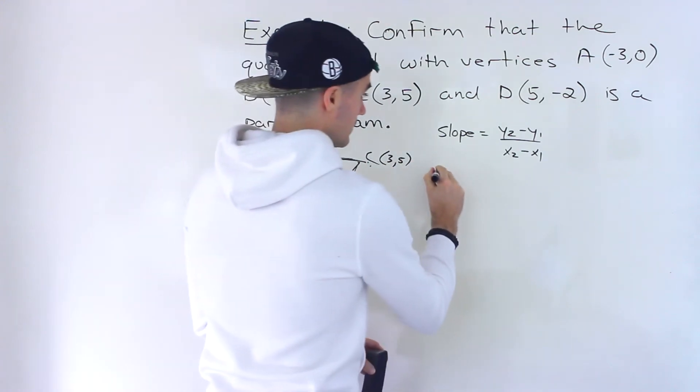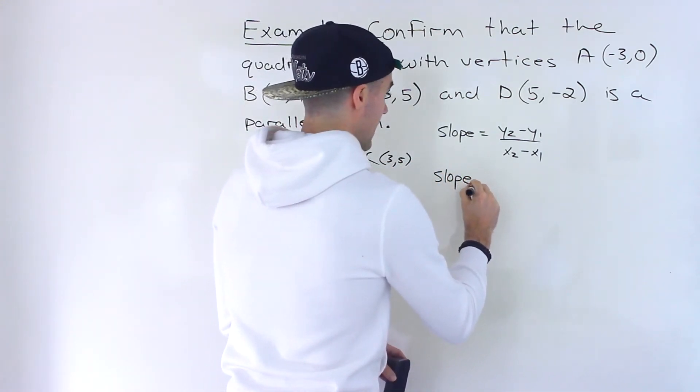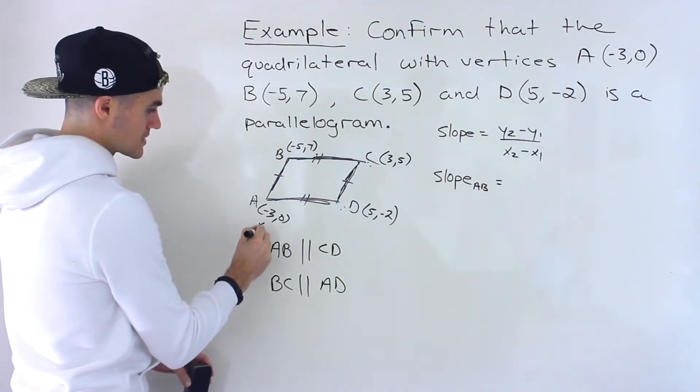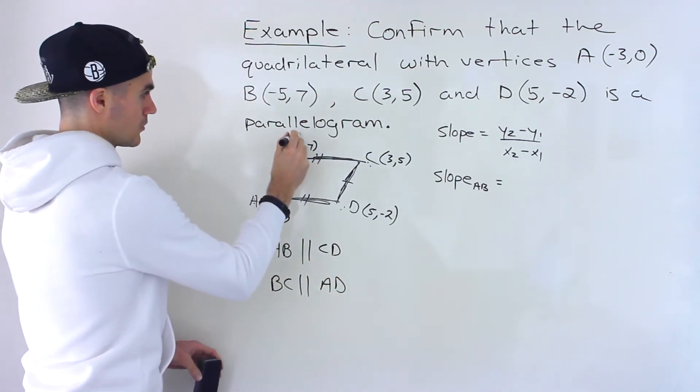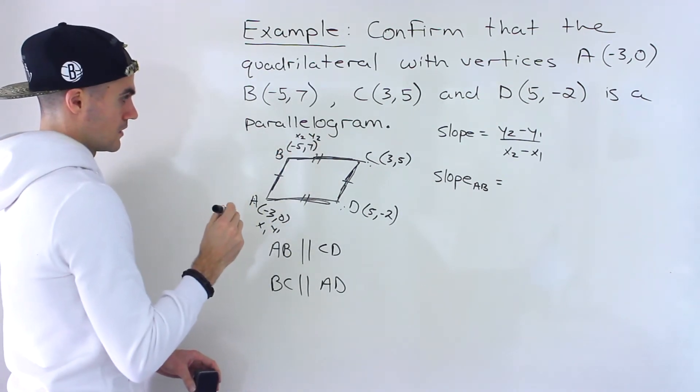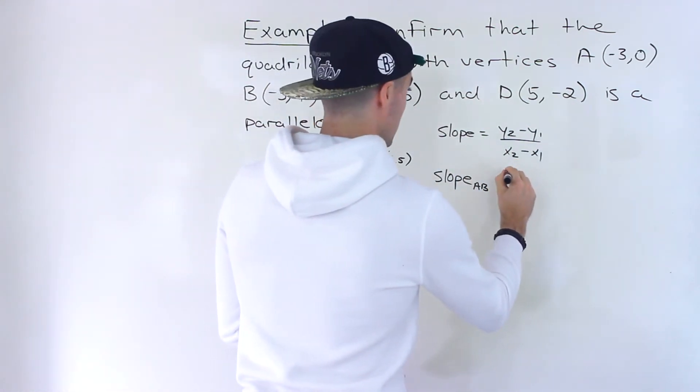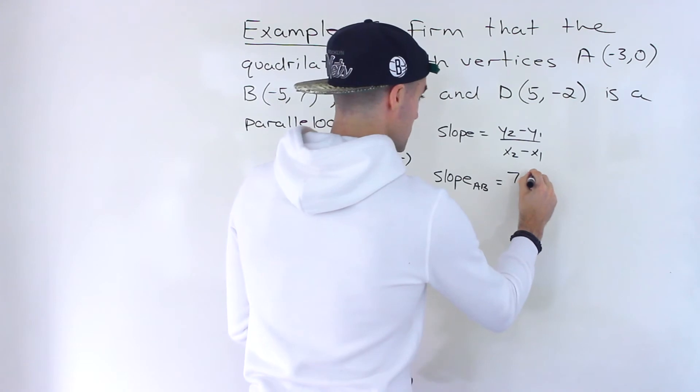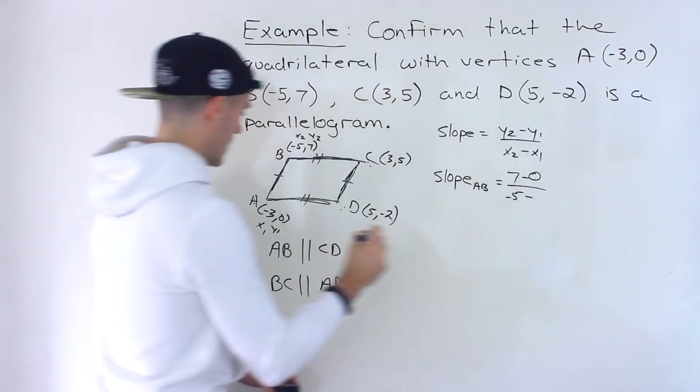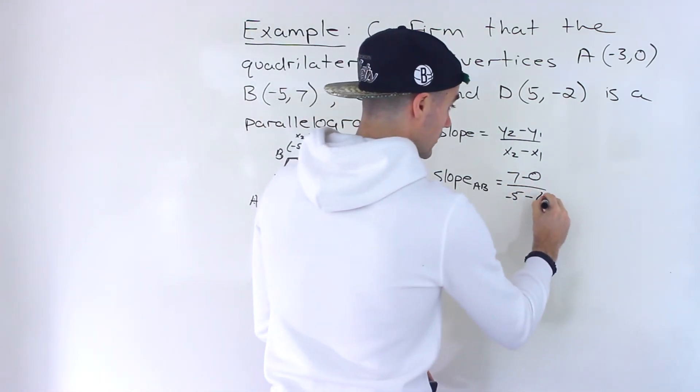Okay, so let's start off with finding the slope of line AB. So let's label these points. I'm going to label this X1, Y1, I'll label this X2, Y2 like that. So we'll have Y2 which is 7 minus Y1 which is 0, over X2 which is -5 minus X1 which is -3. So you want to put that in brackets.